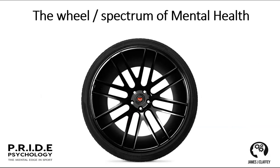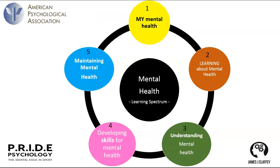The wheel or spectrum of mental health includes: your mental health, learning about mental health, understanding what mental health is, developing skills for mental health, and then maintaining mental health. The American Psychological Association refers to this learning spectrum. You start off with a concept around your mental health — that might be an academic reference or just a feeling you have. As we grow older, we start to learn about concepts again, citing back to memories or life events.